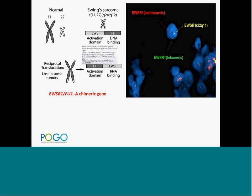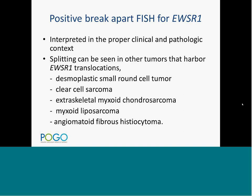Ewing sarcoma has a characteristic translocation and fusion genes leading to a chimeric gene essential for tumor pathogenesis. The most widely used molecular test is the EWSR1 break-apart FISH probe, which shows splitting of the EWSR1 locus. A positive EWSR1 break-apart result must be interpreted in proper clinical and pathological context, because other tumors — including desmoplastic small round cell tumor, clear cell sarcoma, extraskeletal myxoid chondrosarcoma, myxoid liposarcoma, and angiomatoid fibrous histiocytoma — can also harbor EWSR1 translocations.